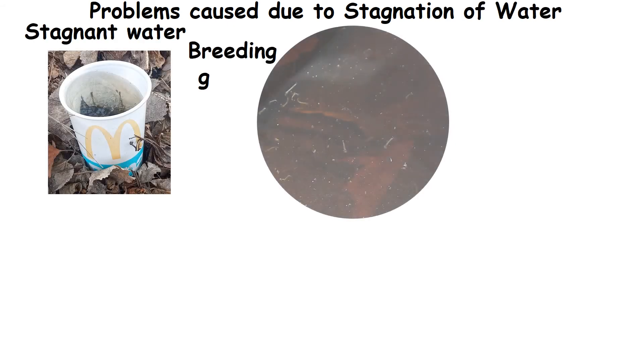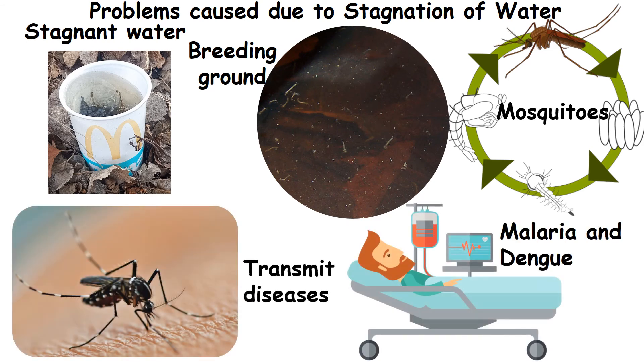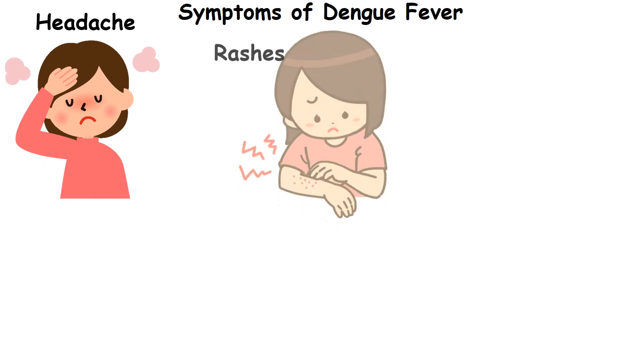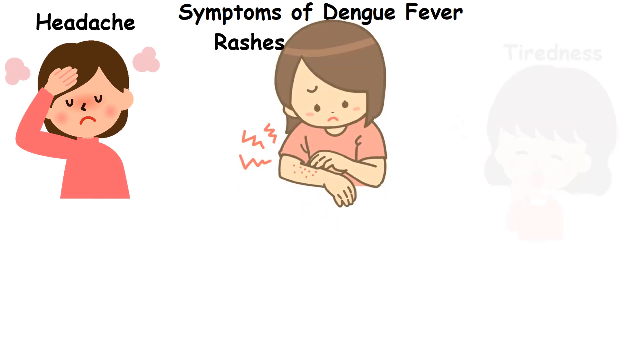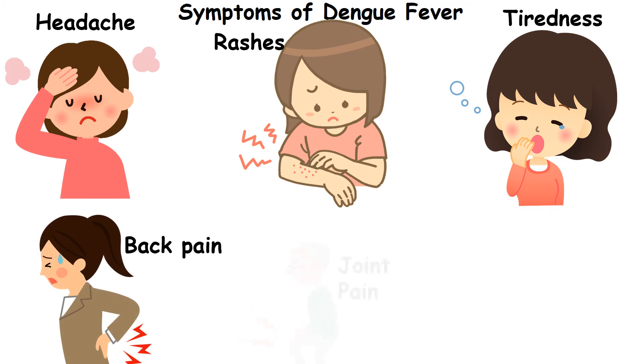Problems caused due to stagnation of water: Stagnant water can become a breeding ground for mosquitoes that transmit diseases. Malaria and Dengue fever are the main dangers of stagnant water. Symptoms of Dengue fever include severe headache, rashes on the arms and legs, extreme tiredness, and back pain.